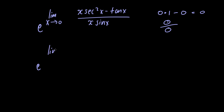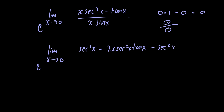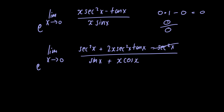So we have e raised to the limit as x approaches 0. To take the derivative of the numerator we use the product rule, giving us secant squared of x plus 2x times secant squared of x times tangent of x minus secant squared of x. For the denominator we also use the product rule, giving us sine of x plus x multiplied by cosine of x. The secant squared terms cancel. Letting x tend to 0 in the numerator gives 0 since tangent of 0 is 0, and in the denominator we also get 0.